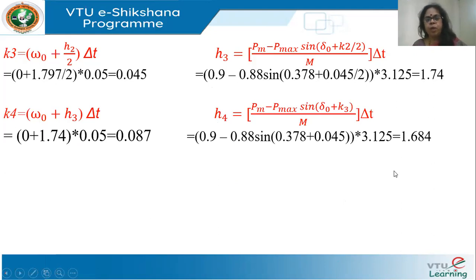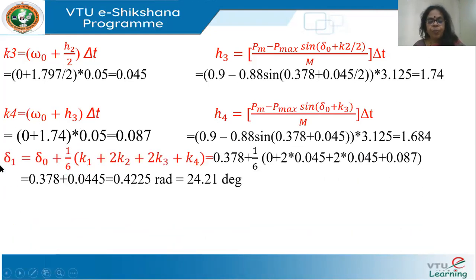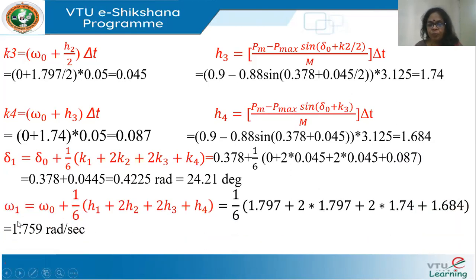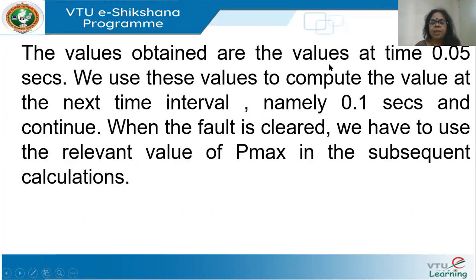Once all 8 coefficients K1, K2, K3, K4, H1, H2, H3, H4 are computed, I update the values. δ₁ = δ₀ + (1/6)(K1 + 2K2 + 2K3 + K4). Remember, these are in radians — not degrees. δ₀ is also in radians. I get δ₁ = 0.425 radians = 24.21 degrees. Similarly, ω₁ = 1.759 radians per second. These values at t = 0.05 s are then used to compute the values at t = 0.1 s, and so on.